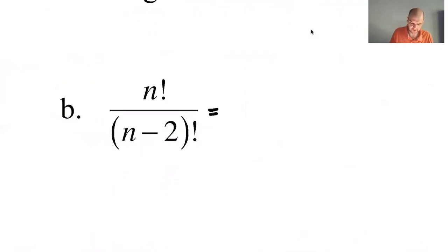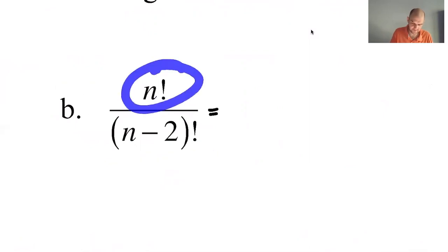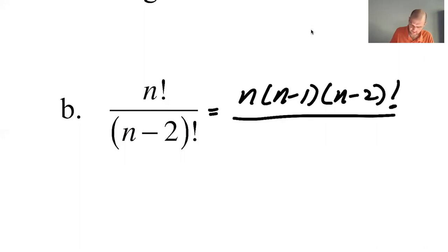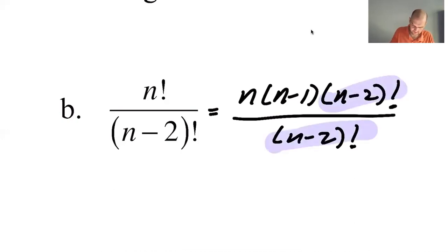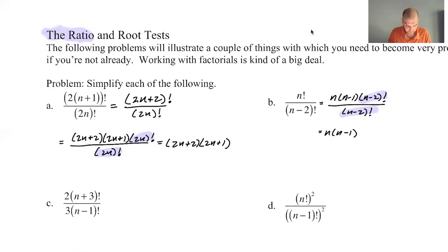Which of these is bigger? Because that's the one you usually want to peel off from. This is n!, which is n times (n−1) times (n−2) and so on. This one is already (n−2)!, so n! is actually bigger — that's where we're going to peel off. So it's n times (n−1), and then what's left is (n−2) and everything after it, which is (n−2)!. Over (n−2)! — those cancel. So this is just n times (n−1). Just don't be intimidated by them, basically.